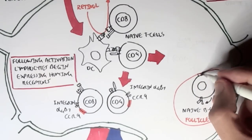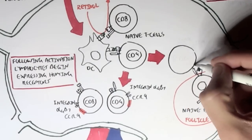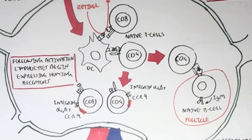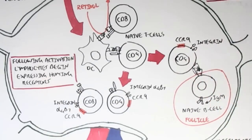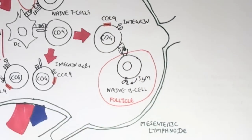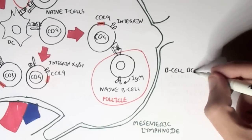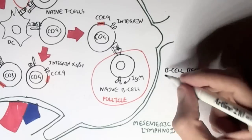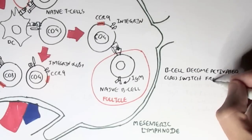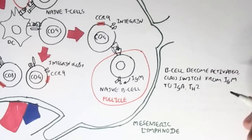The naive B cells can then be activated by the activated CD4 cell, which is a T helper cell. Once the B cell is activated by the T helper cell, the B cell will begin maturing and will begin class switching, meaning that it will class switch from IgM antibodies and begin expressing IgA antibodies. IgA antibodies are important in the mucosal immune system.